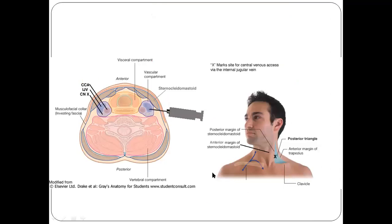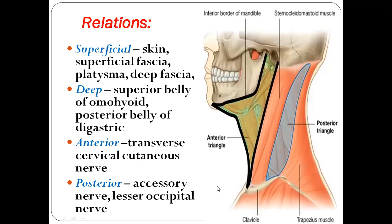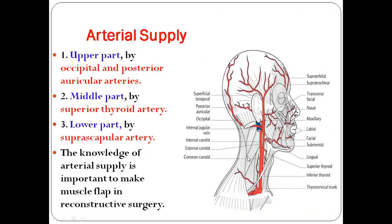The relations of sternocleidomastoid can come as an essay or five-mark question. Superficial relations: skin, superficial fascia, platysma, and deep cervical fascia. Deep relations anteriorly: superior belly of omohyoid and posterior belly of digastric. Anteriorly also: transverse cervical cutaneous nerves. Posteriorly: accessory nerve and lesser occipital nerve.